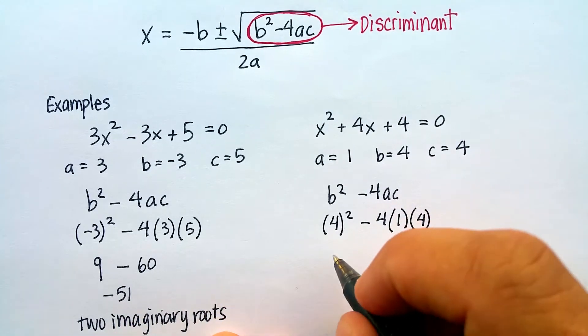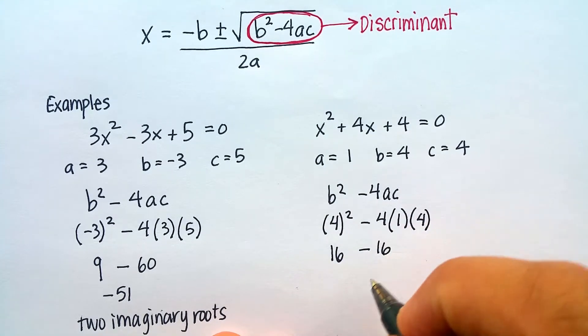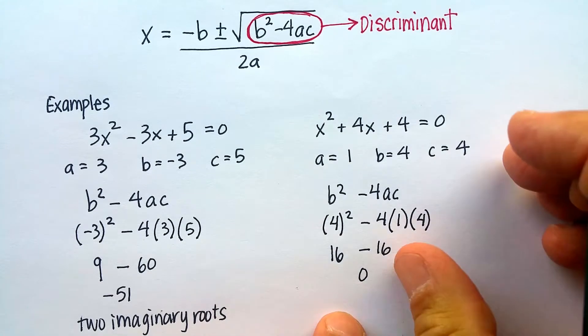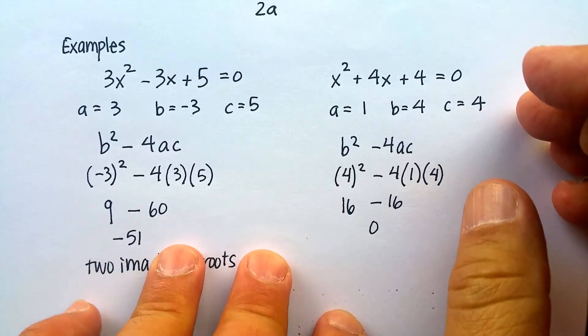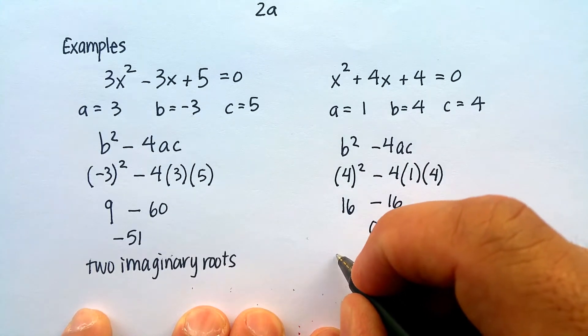Looks like it's going to give me 0, doesn't it? Because that's 16 minus 16. My answer again is 0. This tells me that my parabola is going to cross the x-axis only once. It's just going to touch it right where the vertex is.